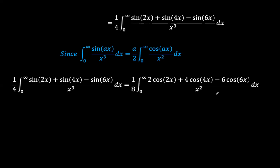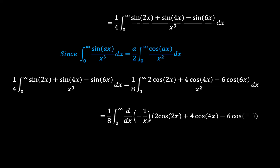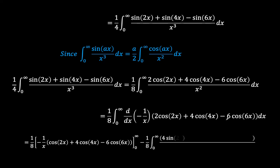Now, 1 over x squared is the same as the derivative of negative 1 over x. Using integration by parts again, we get u·v, which is the product of negative 1 over x and 2·cos(2x) plus 4·cos(4x) minus 6·cos(6x), minus 1 over 8 times the integral of the derivative of the numerator: negative 4·sin(2x) minus 16·sin(4x) plus 36·sin(6x). The two negatives — from negative 1 over x and from the derivatives of the cosine terms — interact to give a positive.